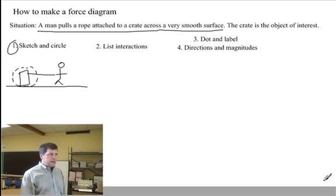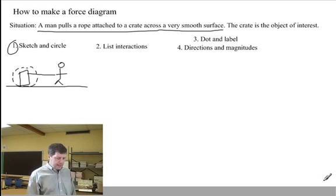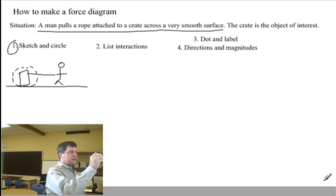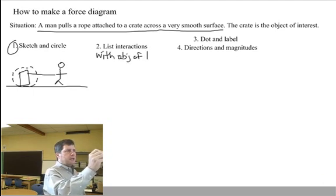List interactions. What is an interaction? An interaction is a push or a pull, and with only one exception, an interaction is between two objects that are touching. The full version of this instruction is list interactions with the object of interest.